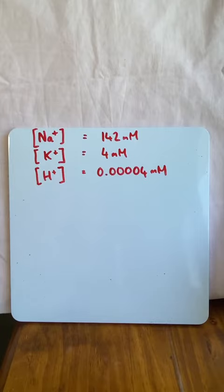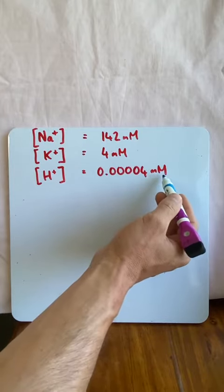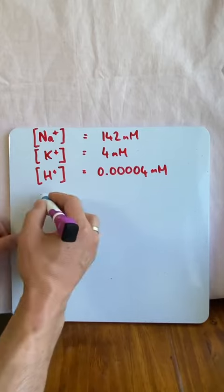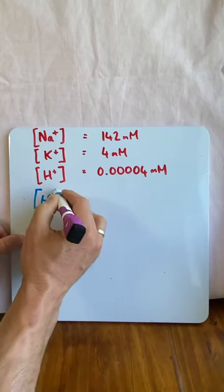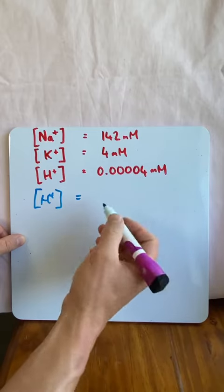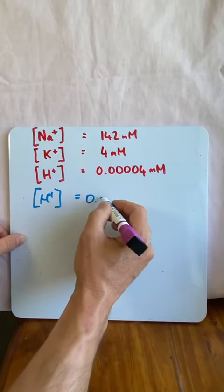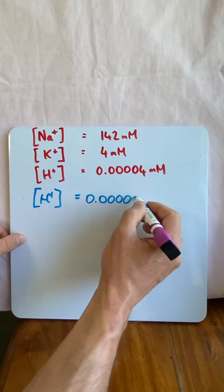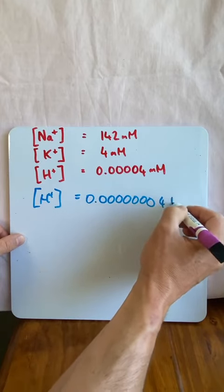So anytime you want to change around with values or units, you don't want to use the millimolar, you want to go straight to the molar. So we need to change this so the hydrogen ion concentration is the molar. And going from millimolar to molar is three decimal places. So it's going to be 0.00000004 molar.